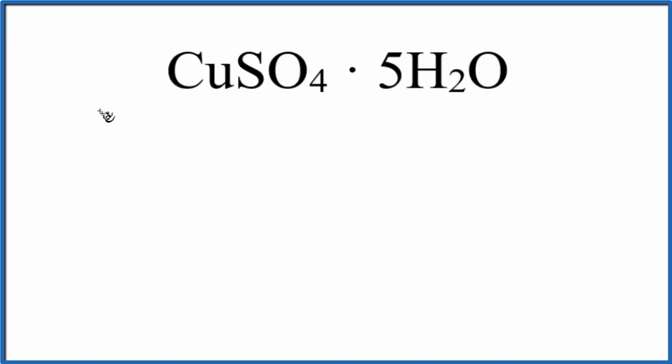So for copper sulfate, we have copper, sulfur, and oxygen. There's nothing written here, so we assume there's a one. So we have one copper atom. Again, nothing written after the sulfur. Assume that to be one. Four oxygen atoms.